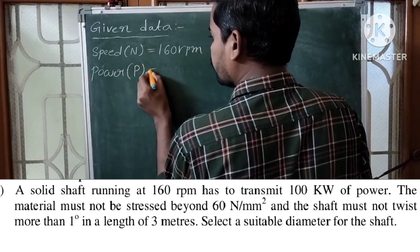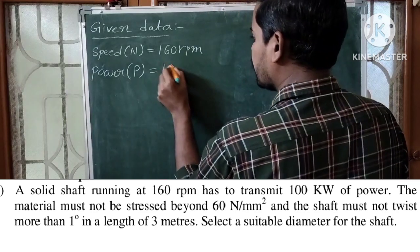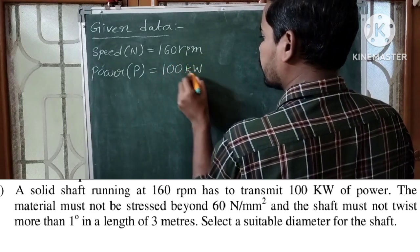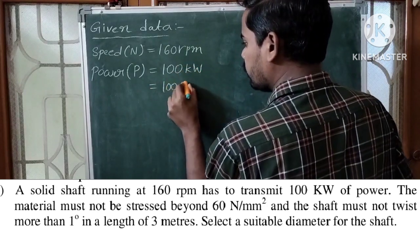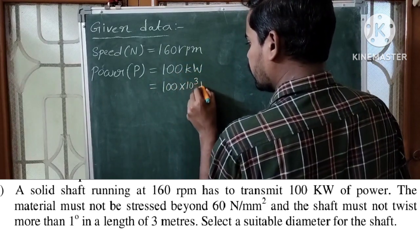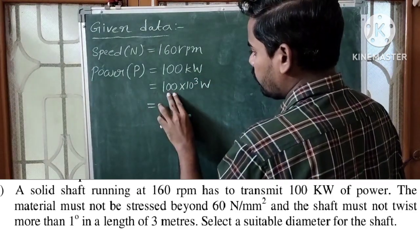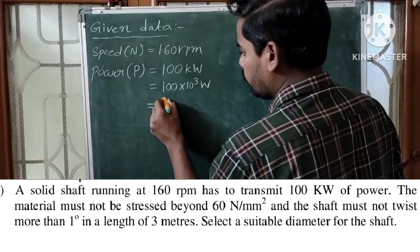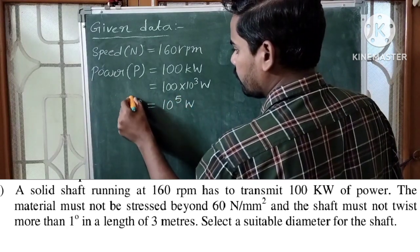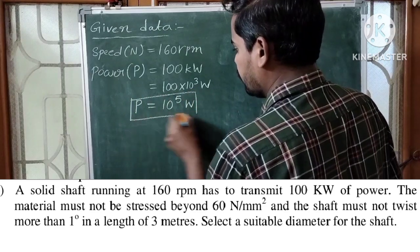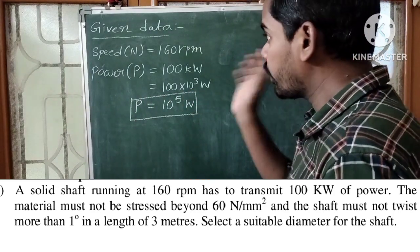Power transmitted, capital P, is equal to 100 kilowatts. Kilo means 10 cubed, so 100 kilowatts equals 100 into 10 cubed watts. We have two zeros: 10 squared into 10 cubed gives 10 to the power 5 watts. This is the power transmitted by the shaft.